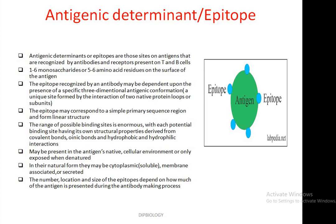The number, location, and size of the epitopes depend on how much of the antigen is presented during the antibody-making process. An antigen can have several epitopes — small areas which are the actual target of a particular specific antibody. Antigens have different types of epitopes, and based on their specificity, T and B cells can react to and neutralize the antigen.